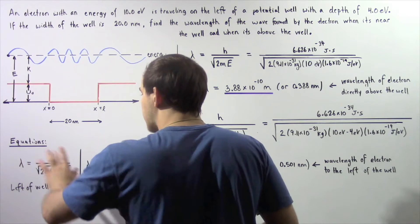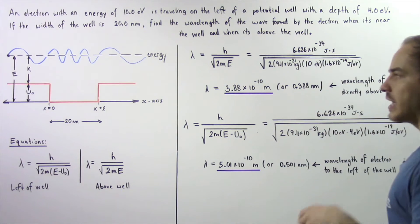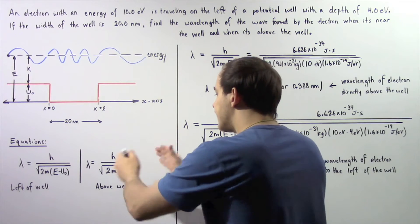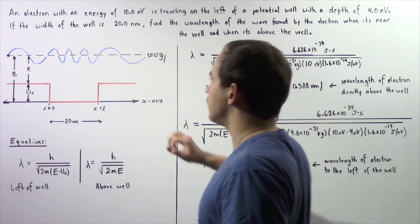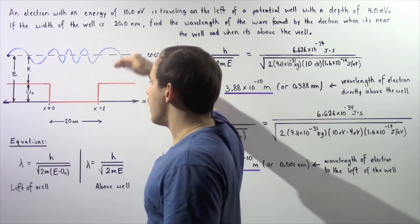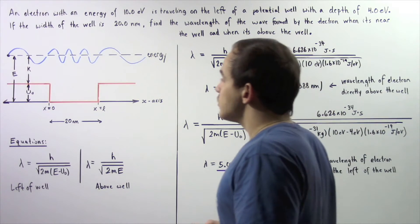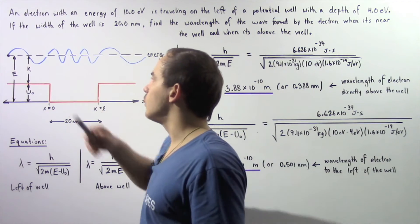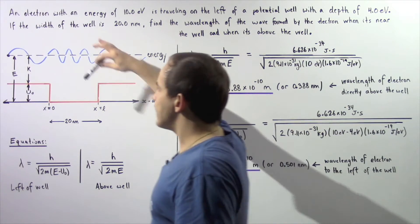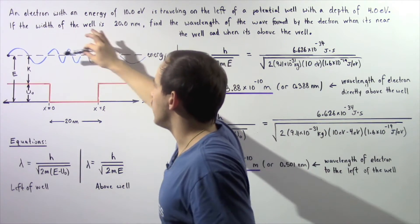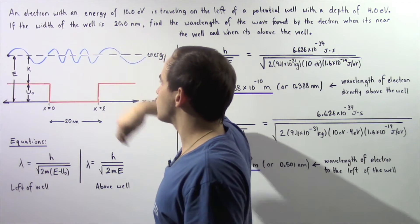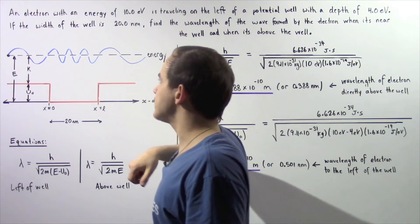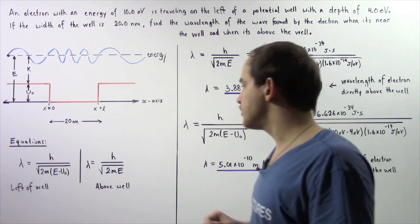We need to use the following two equations. Equation one gives us the wavelength of our wave produced by the electron when found to the left of our potential well. The second equation gives us the wavelength when the electron is found directly above the potential well. Notice that as the electron travels across the potential well, the wave function's frequency of oscillation increases, meaning the wavelength decreases — the distance between consecutive crests decreases — and that is explained by these two equations.